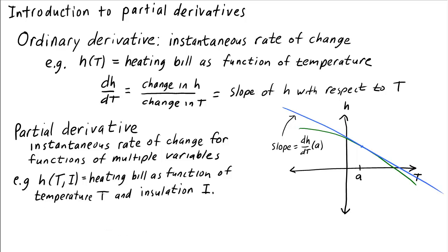This function h will have two partial derivatives. One will be exactly like the derivative we have here, only we denote it slightly differently. We write it as ∂h/∂T, where these funny d's mean partial derivative. Why is this a partial derivative? Well, it's because h is a function of two variables, T and I, and we're only looking at change with respect to one of them, the temperature T.